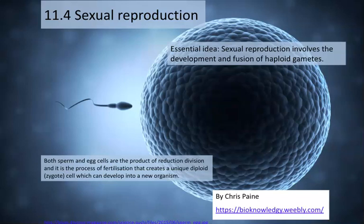Hello everyone, this is Mr. Burke. We're going to review subtopic 11.4 for sexual reproduction. This is the higher level topic. The essential idea here is that sexual reproduction does involve the development and fusion of haploid gametes. We're going into more detail about how that actually happens and how it differs in the development of sperm versus the development of eggs.